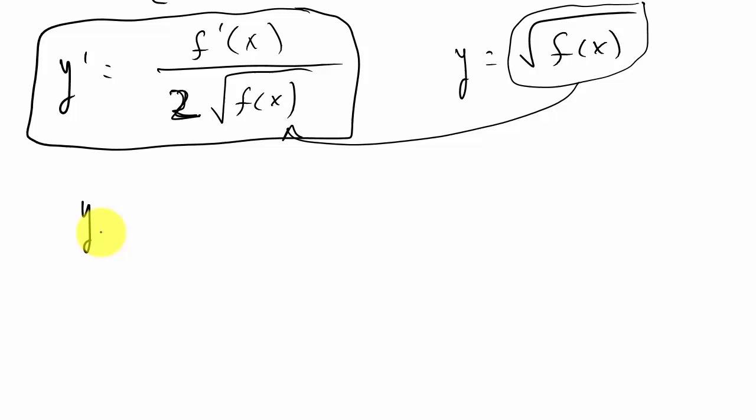And then in the numerator it's the derivative of what's underneath the square root. So let me show you. All right, so we have y equals the square root of, let's just say, 3x squared plus 2, and I want to take the derivative. So just what this says, I've got 2 times the square root of 3x squared plus 2.